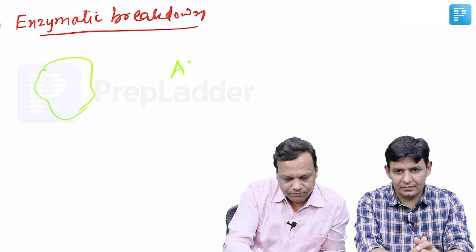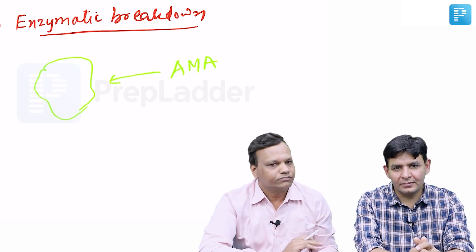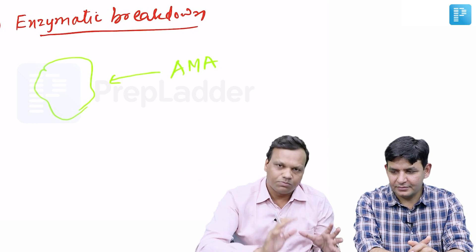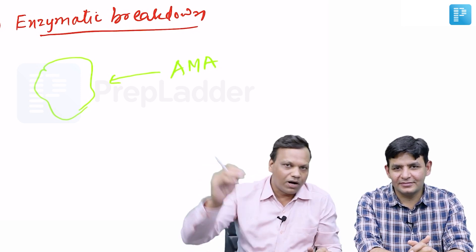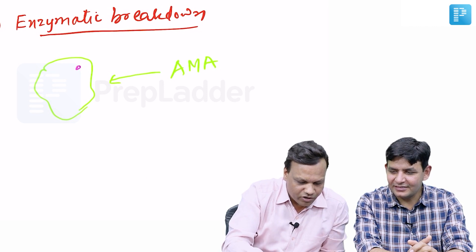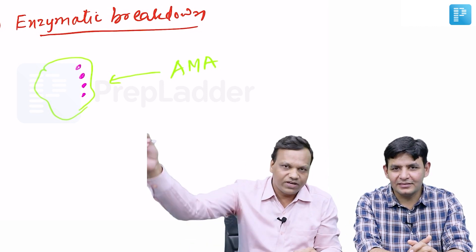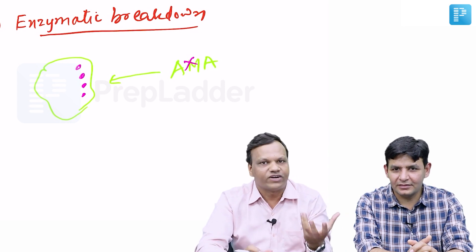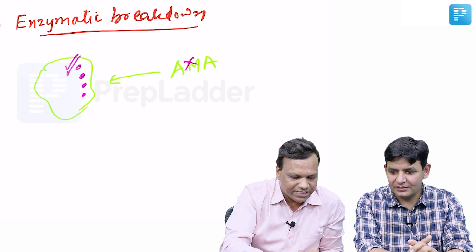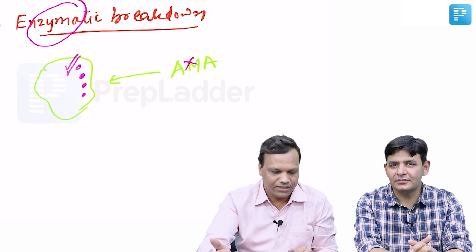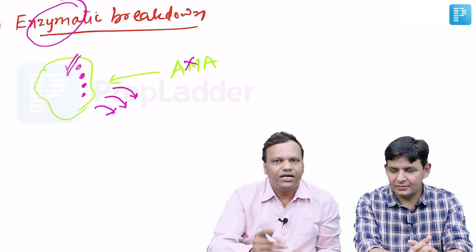In enzymatic breakdown, this is the bacteria, and we have given some antimicrobial which will kill the bacteria. Now, this bacteria develops security guards — enzymes — which shoot the antibiotic when it comes from outside, breaking it down so the bacteria survives. That is the development of drug resistance through enzymatic breakdown. These enzymes break the antimicrobial, like penicillinases which break penicillins.